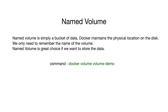Named volume is basically like a bucket of data. Docker maintains the physical location on the disk — you don't have to give the path of a folder to map with the Docker container, you just name a particular volume. The command is `docker volume` and then the volume name. Docker takes care of creating and maintaining it on disk. Named volume is generally used when you are storing data but don't care about the specific location — Docker handles that.